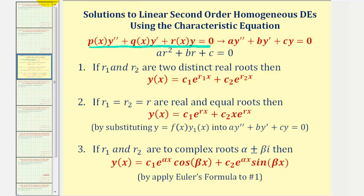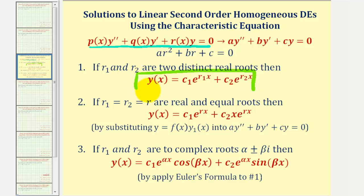For these examples, since the characteristic equation will have two distinct real roots, the general solution to the differential equation will be in this form here. We'll solve the characteristic equation for r, and since we'll have two solutions, r sub one and r sub two, we'll simply perform substitution into this function here.